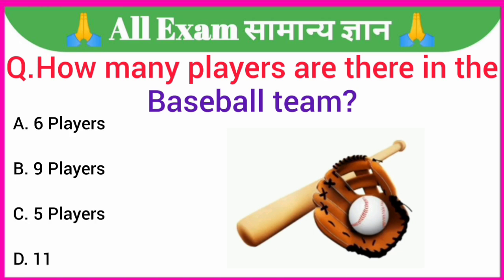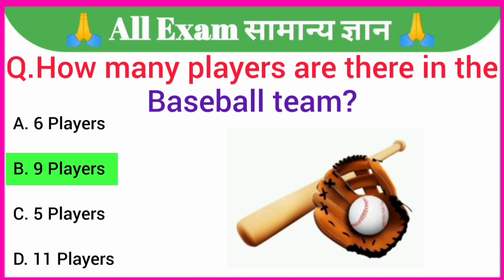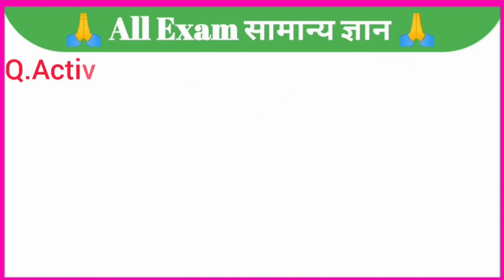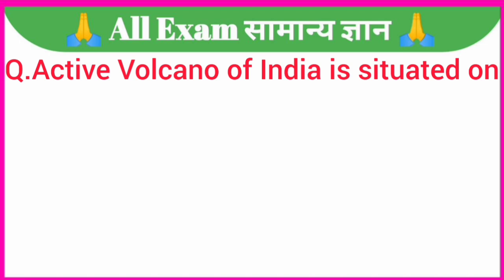How many players are there in a baseball team? A. Six players, B. Nine players, C. Five players, D. Eleven players. Your correct answer is option B. Nine players.